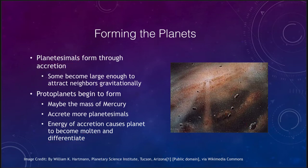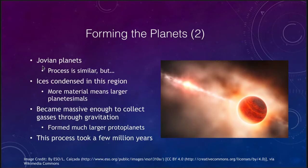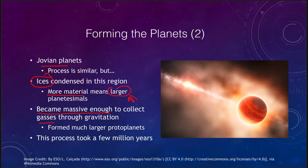When we look at the differences in the outer solar system, what's different about the Jovian planets? Ices were able to condense in this region, so there was more material, meaning larger planetesimals and larger objects were able to form. Eventually they became massive enough to collect gases through gravitation — they had enough gravity to collect the hydrogen and the helium. The inner planets never became massive enough to do this; there was not enough material in the inner solar system to form a large enough planet to attract gases directly through gravitation. Only the outer planets could do this, forming much larger protoplanets over the course of a few million years.